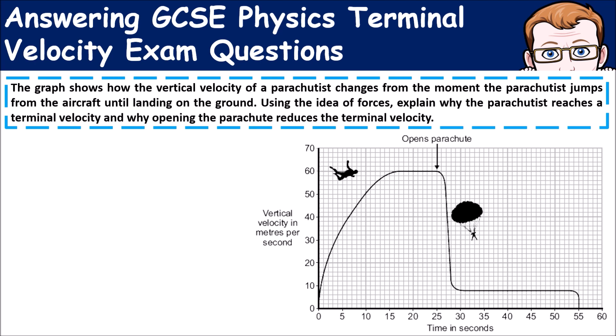Let's have a look at the question. The graph shows how the terminal velocity of a parachutist changes from the moment the parachutist jumps from the aircraft until landing on the ground. Using the idea of forces, explain - the key bit there is the explain part - why the parachutist reaches terminal velocity and why the parachutist reduces its terminal velocity once the parachute opens. We're answering this question in two stages.